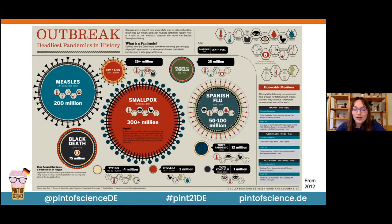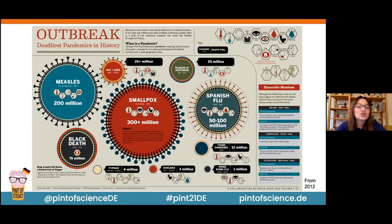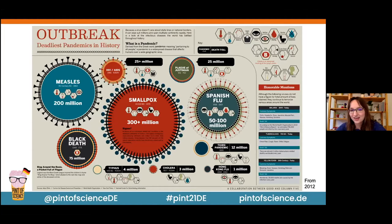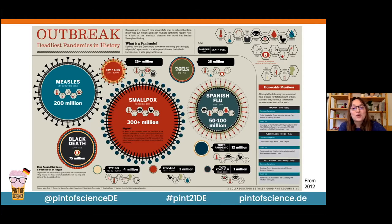If you are quite young you may not even know about smallpox, and I'll get to the reason for that in a minute. For now, if there are any members of the audience over the age of 55, I would like you to check your upper arms — around this region — and see if you have a small circular scar there. If you do, see if you remember why you have it, and if you don't, I'll tell you a bit later.